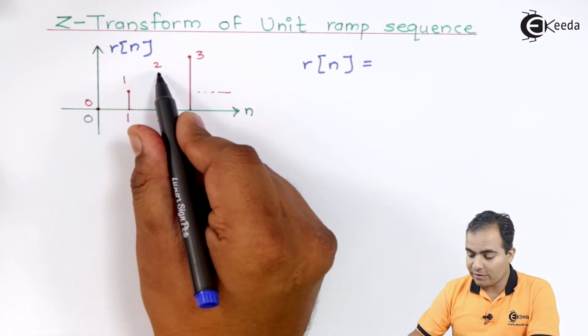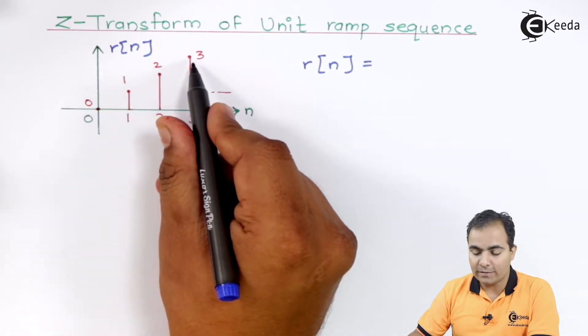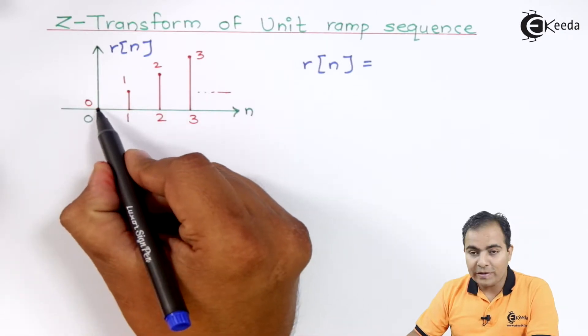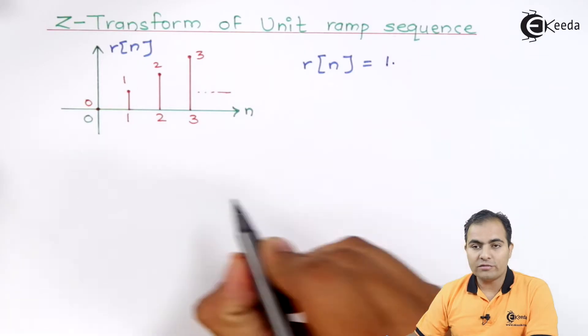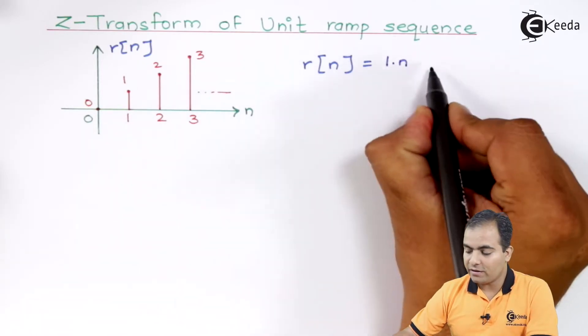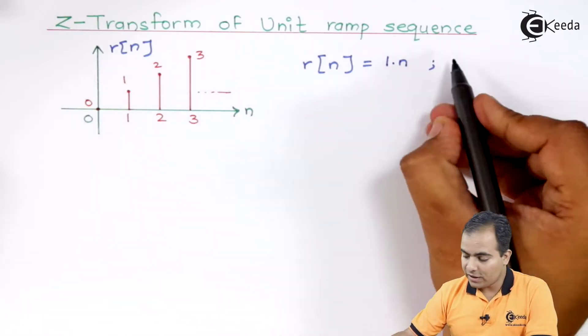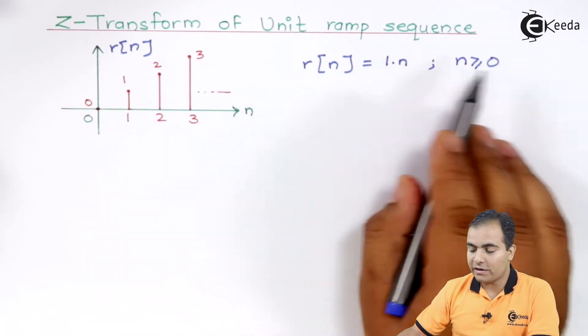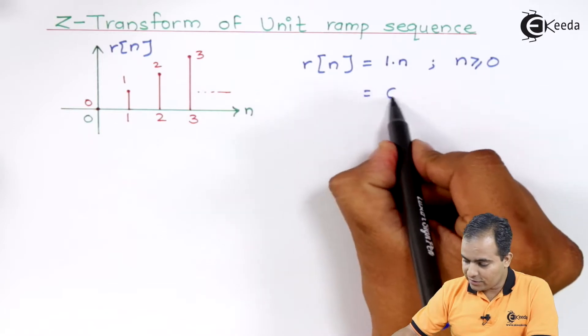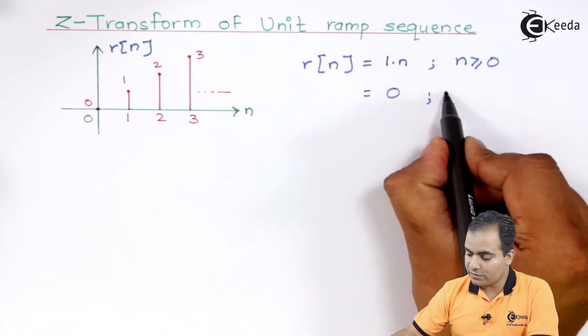Now, the next sample value is increased by 1 and also next sample value is increased by 1, which means our slope is increasing by 1, which means our slope value is 1 multiplied by n. This was the definition and then it is causal function, that's why I am going to write n is greater than equal to 0 and it is 0 when n is less than 0.